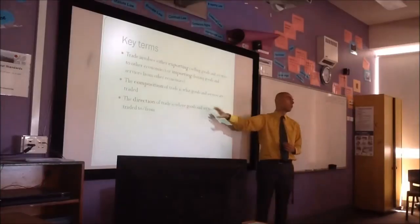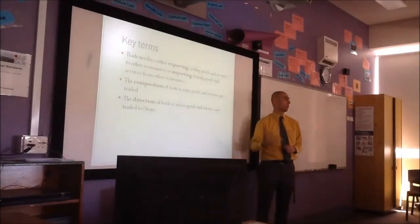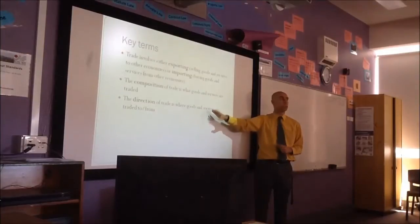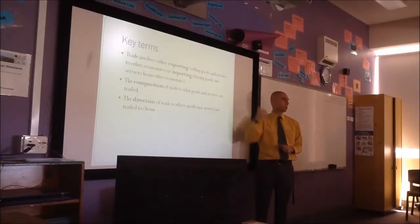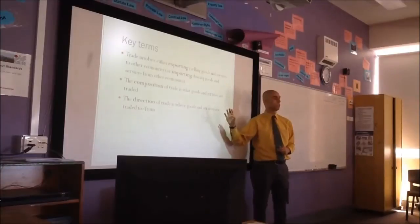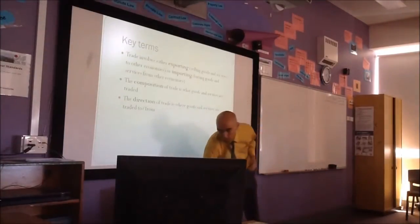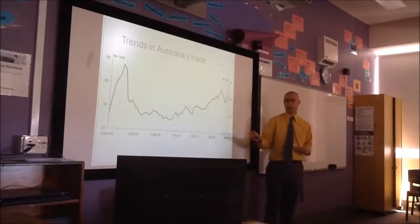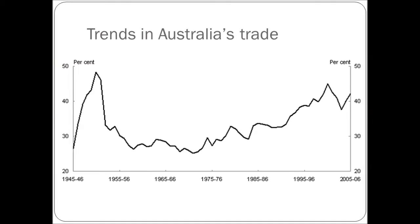When it comes to the direction, it's mostly to and from Asia. Most exports — about three quarters — go to Asia. About half of our imports come from Asia. The name for exports plus imports divided by GDP is trade intensity — what percentage of total output do we trade?